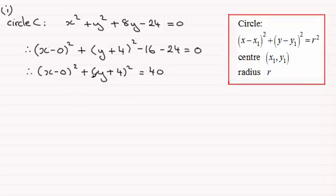It's now in this form, so I can read off that the center of the circle will have coordinates (0, -4).